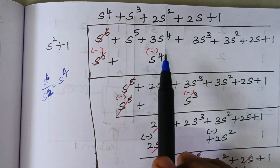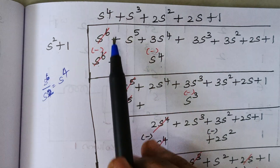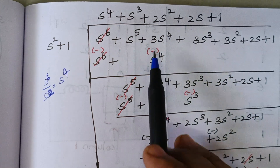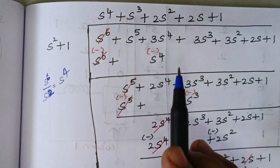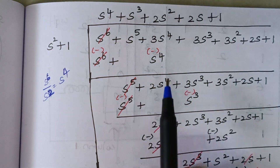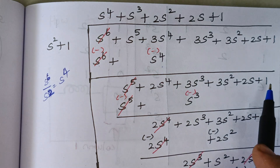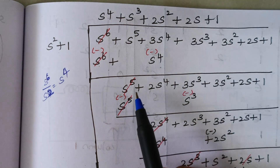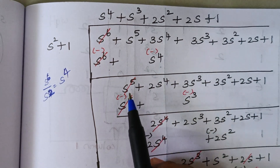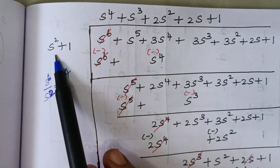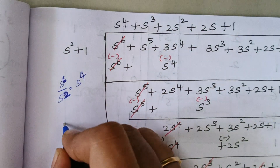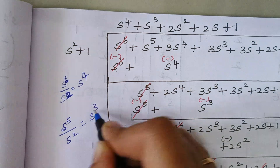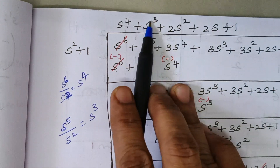The next step is we have to subtract. When you subtract, these two terms cancel each other and 3S⁴ minus S⁴ is 2S⁴, and the remaining terms you write as such. Then the next first term is S to the power 5. We have to divide S⁵ by S², which gives you S cube. So the second term is S cube.